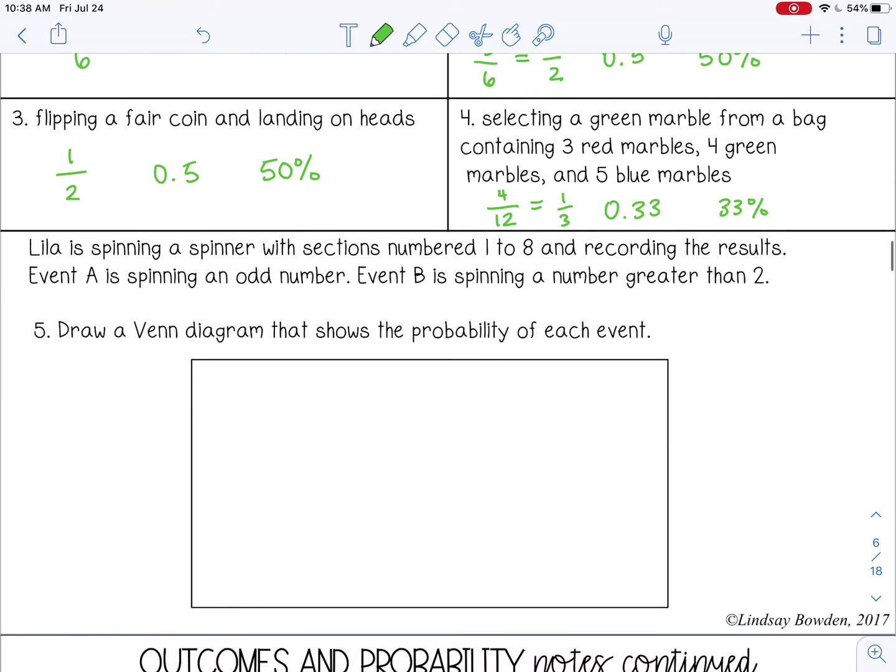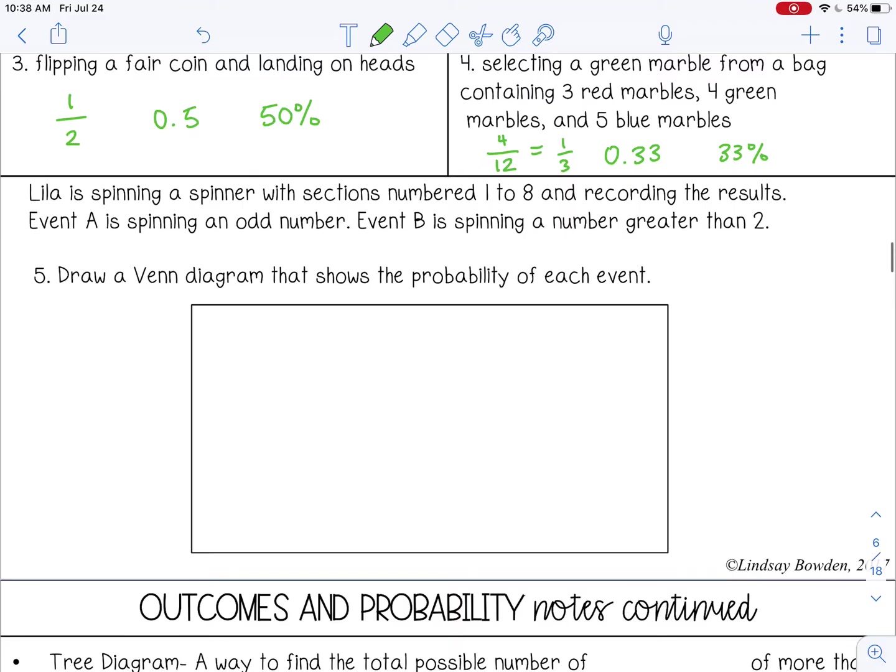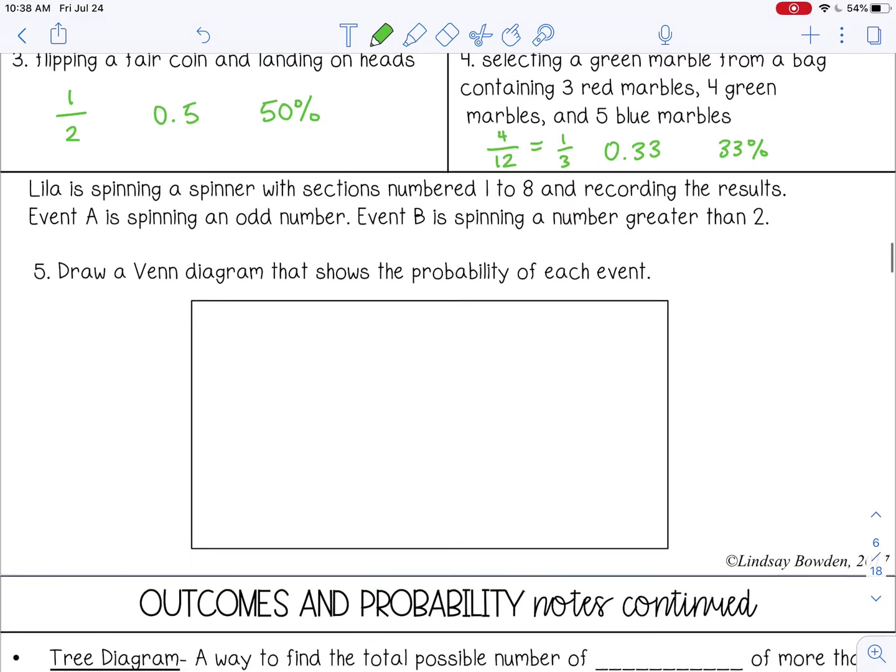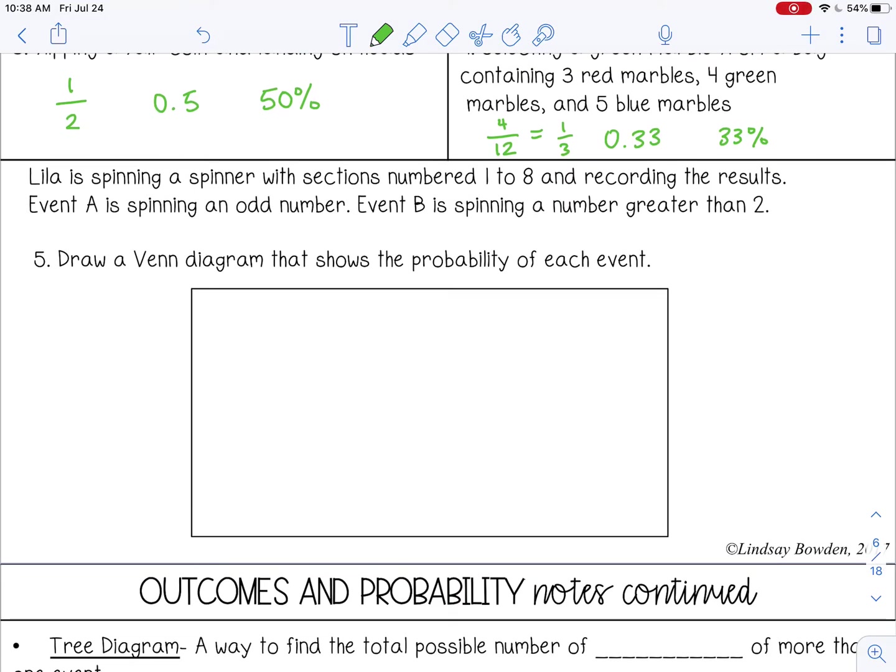Next example. Lila is spinning a spinner with sections numbered 1 to 8 and recording the results. Event A is spinning an odd number, and event B is spinning a number greater than 2. So first of all, let's write out our events.